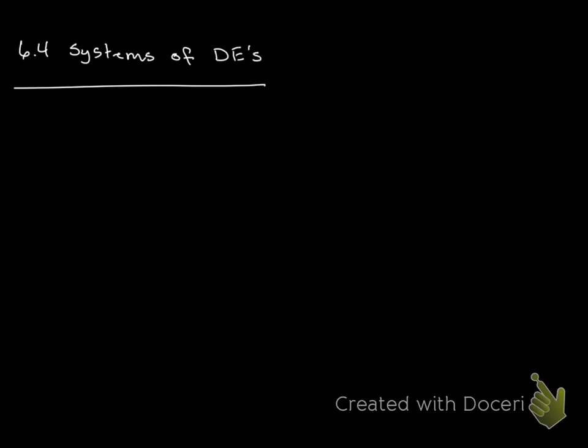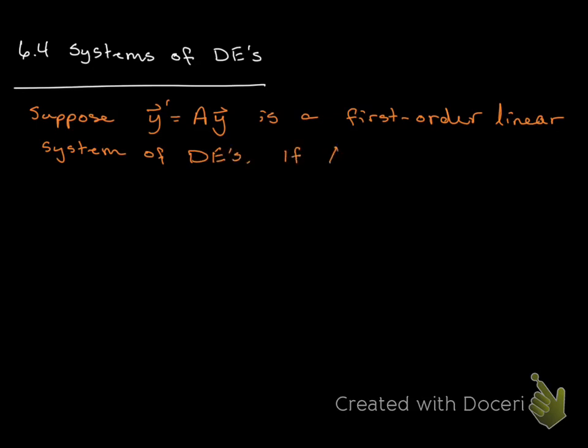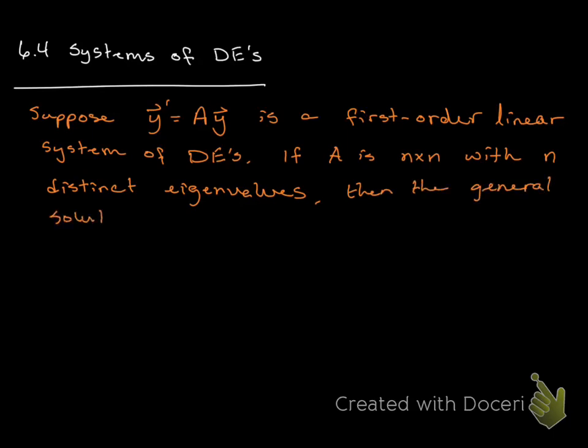First, I want to go back and talk about what form we expect these solutions to take. We remember there's some exponentials involved, but I want to go through that again, and it comes in the form of a theorem. Suppose that y' = Ay is a first order linear system of differential equations. If A is an n by n matrix with n distinct eigenvalues, then the general solution to that system